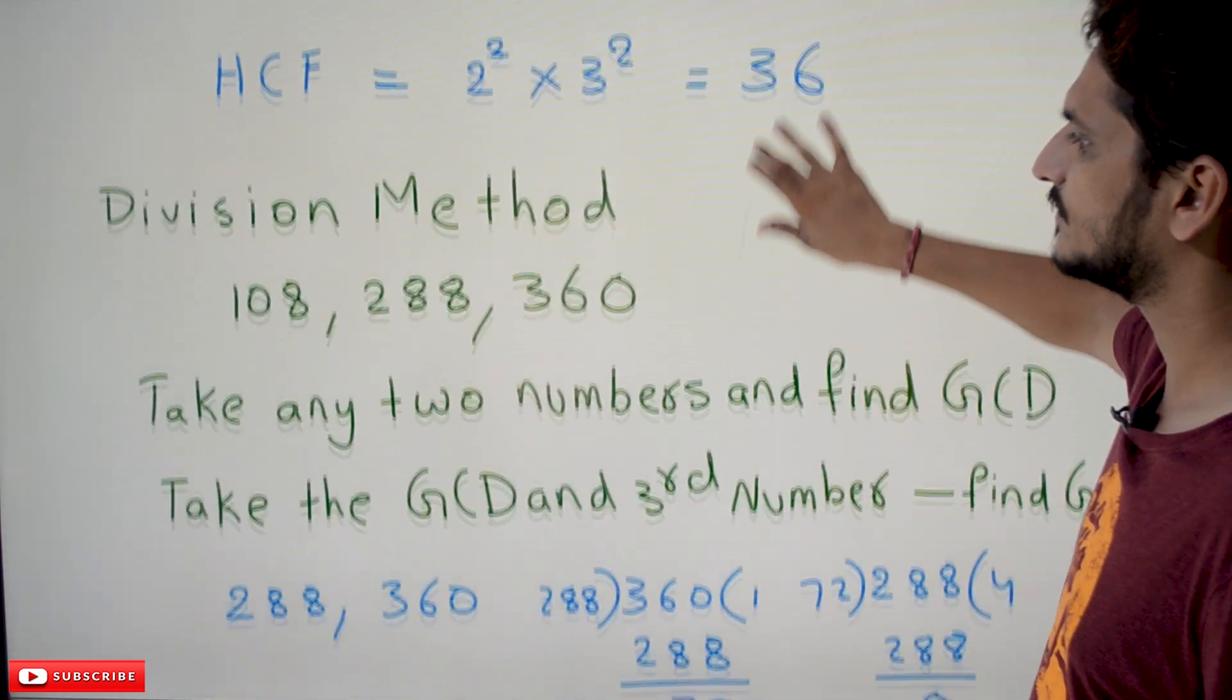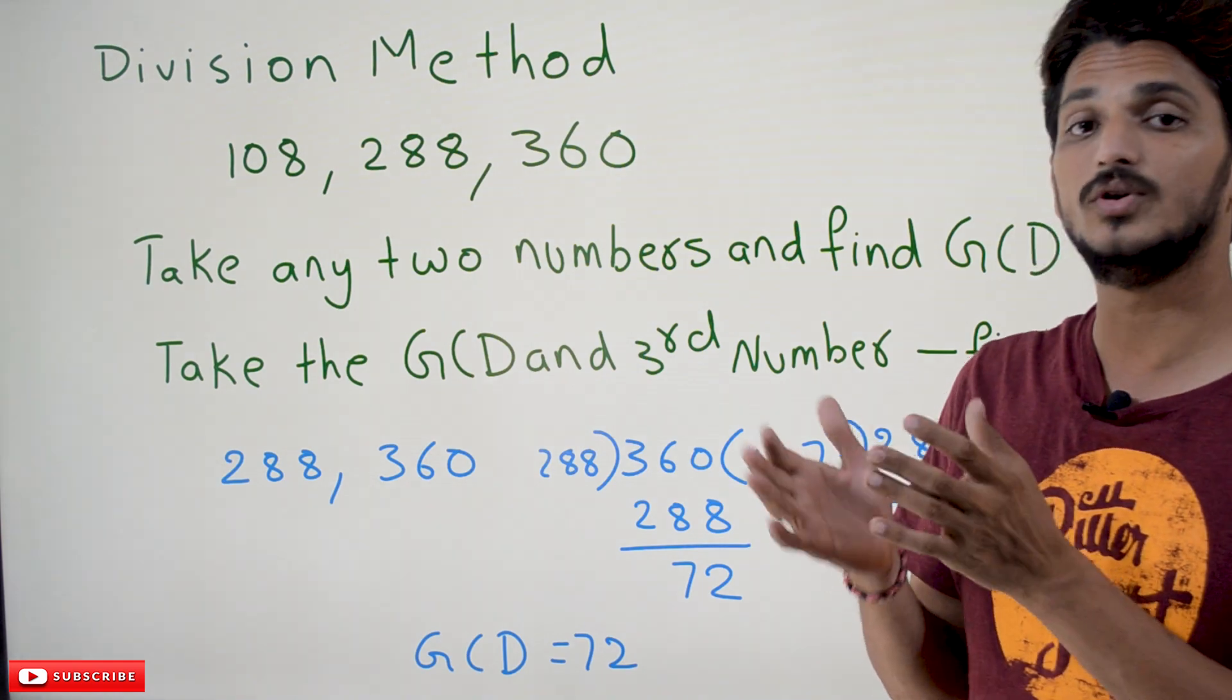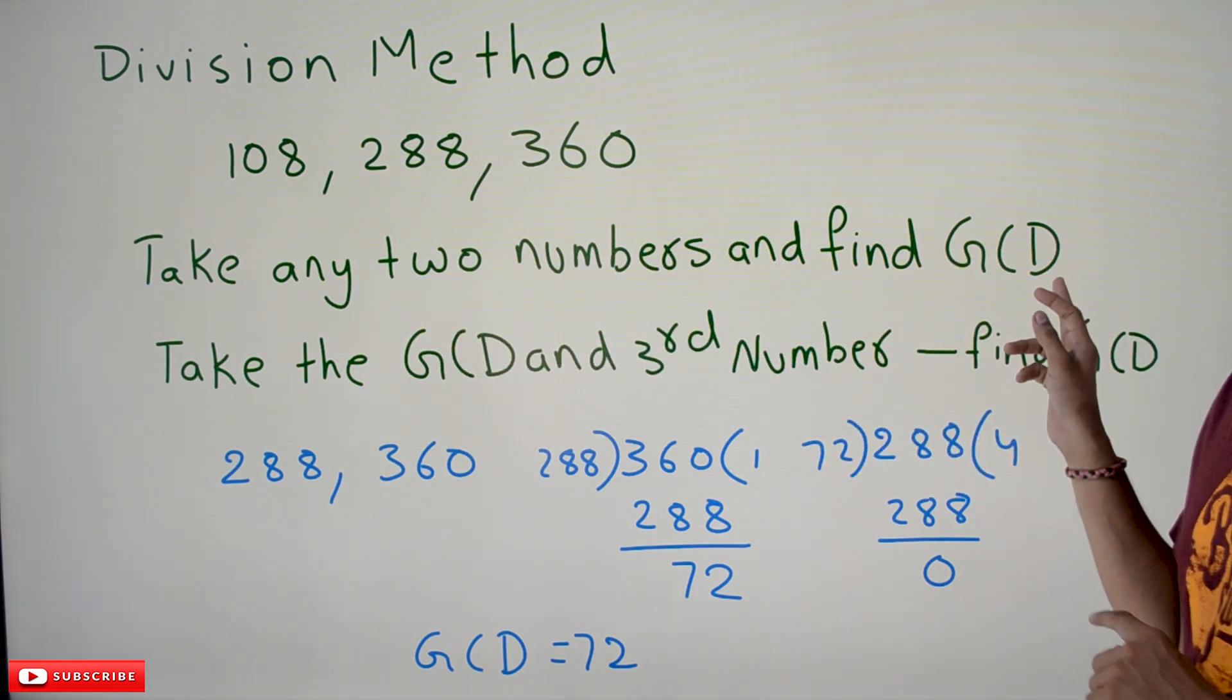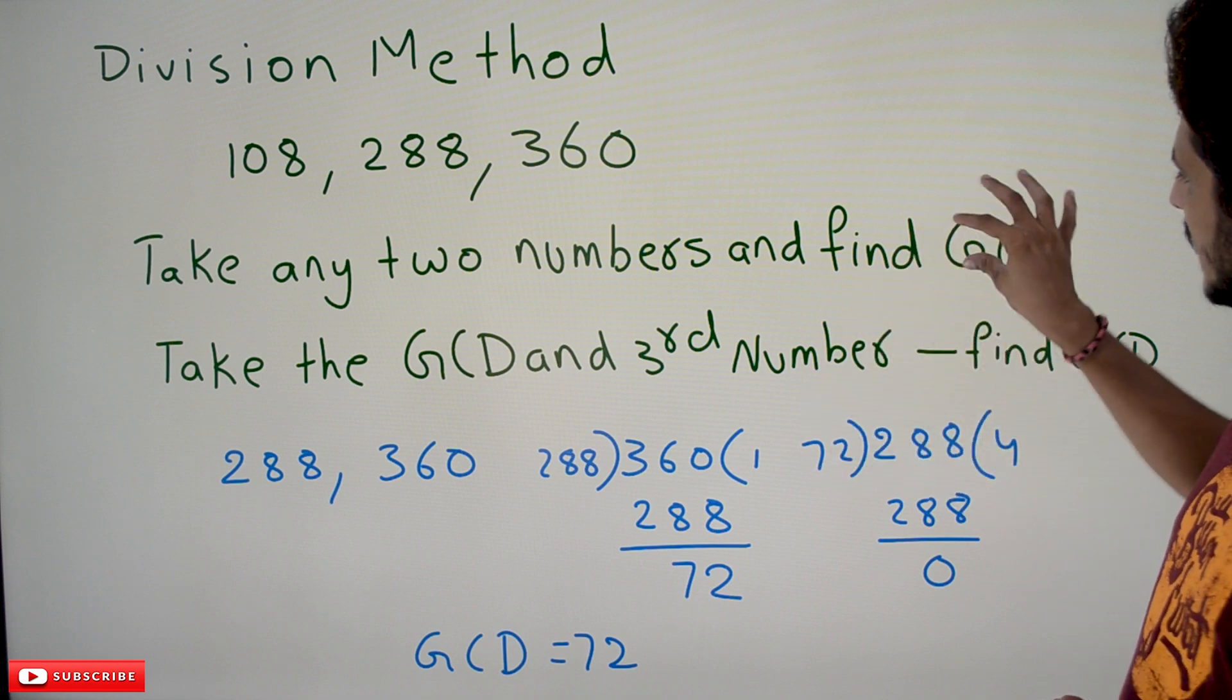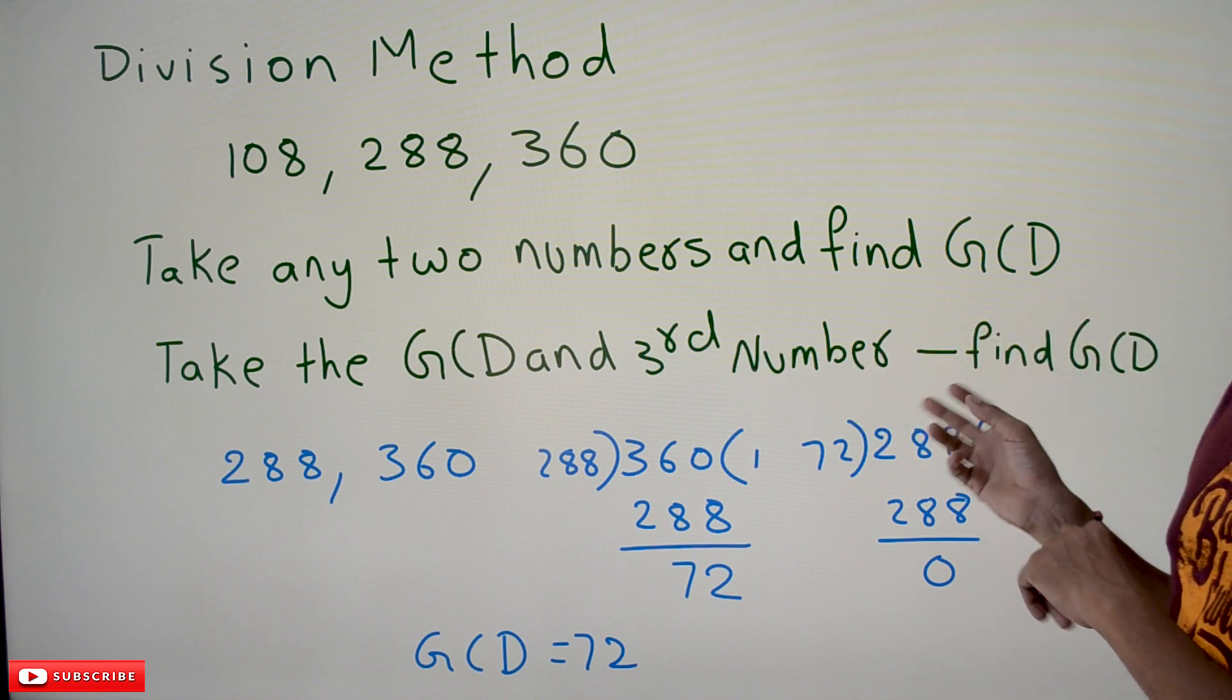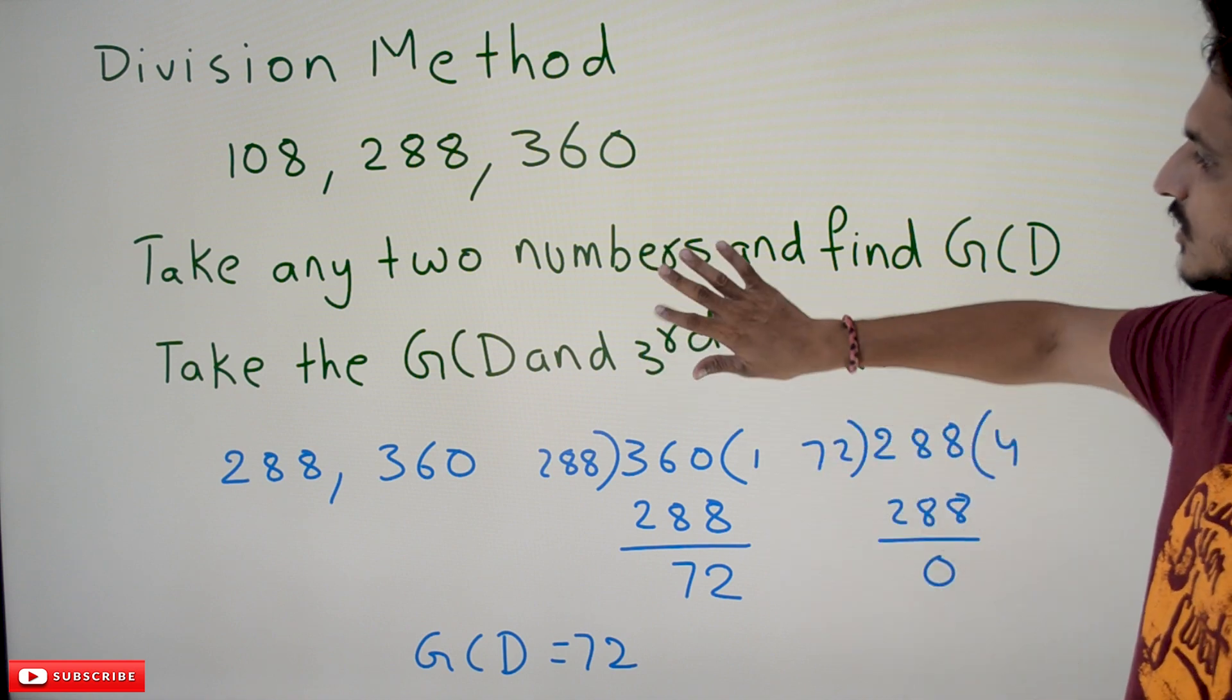If you apply the division method, 108, 288, 360 - in division method, we have to take any two numbers and do the division. Take any two numbers and find GCD. Take the GCD and the third number, and find the GCD again. This process can be repeated for any number of numbers. With an example, you are going to get clarity.